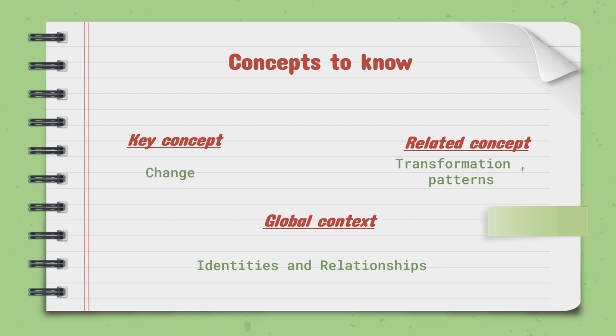The related concept is transformation and pattern. Traits come in patterns of genetic inheritance — the probability of certain traits comes in patterns, and they are transformed from one form to another. The global context is identities and relationships: how does the change and transformation of certain genes and traits help identify our identities and relationships between the people around us?